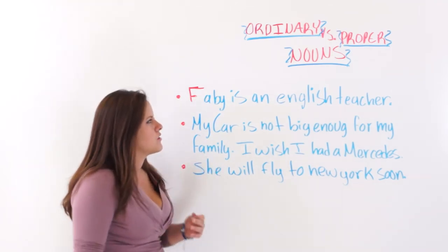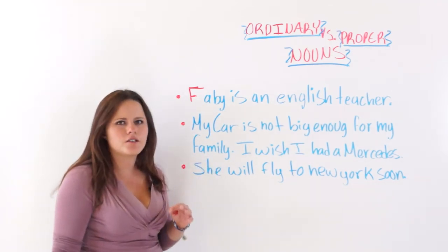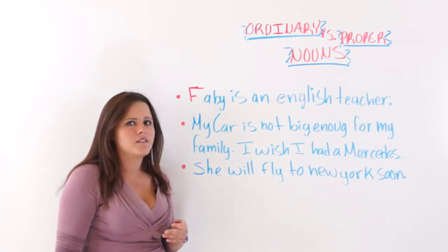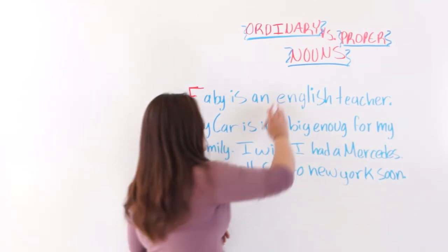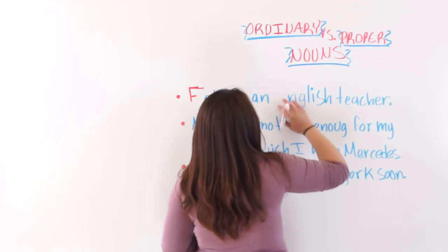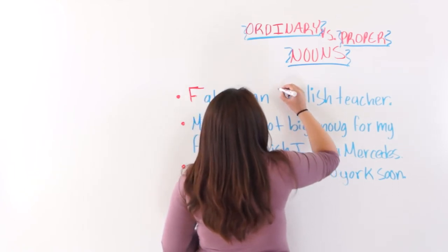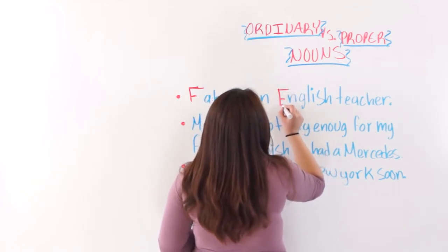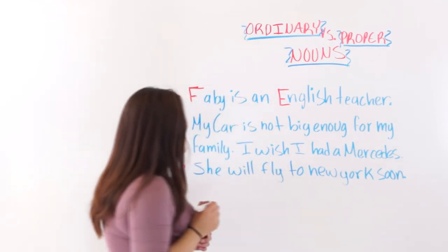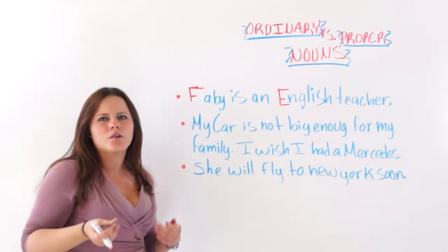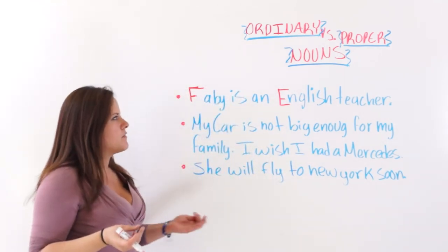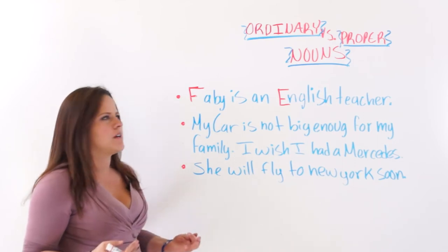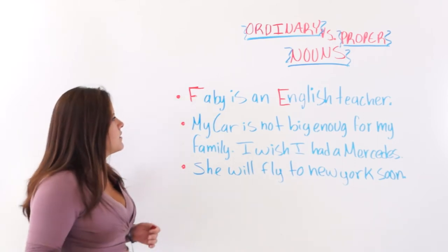'Fabi is an English teacher.' Do you see any other mistakes there? That's right — 'English.' 'English' is also a proper noun because it's a specific language. So it is a proper noun: 'English teacher.'